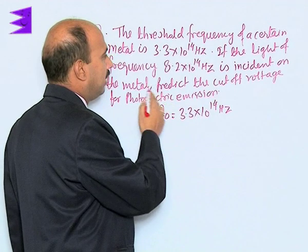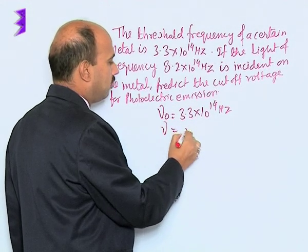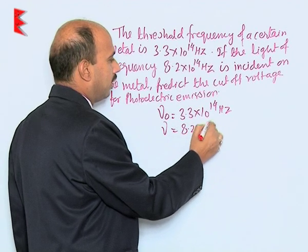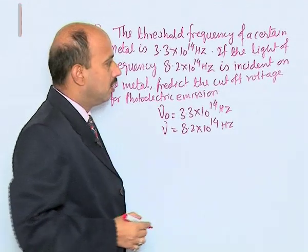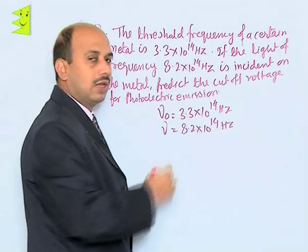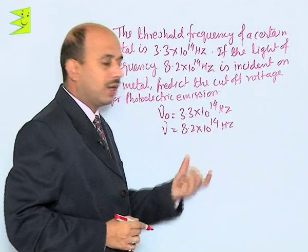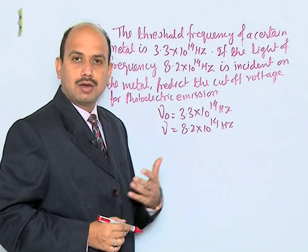If the light of frequency ν = 8.2×10^14 Hz is incident on the metal, predict cut-off voltage for the photoelectric emission. So now these two are given, we have to calculate cut-off voltage.